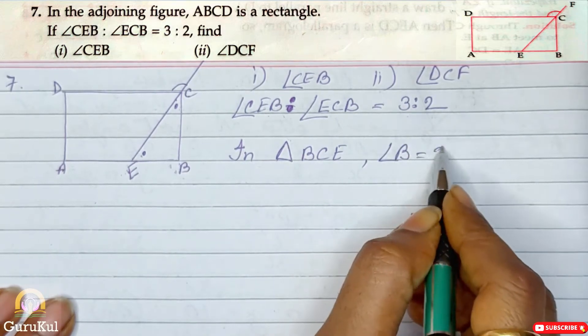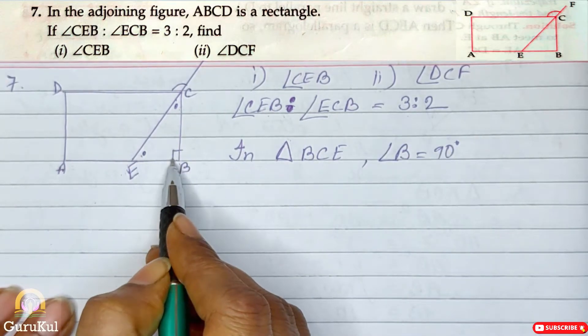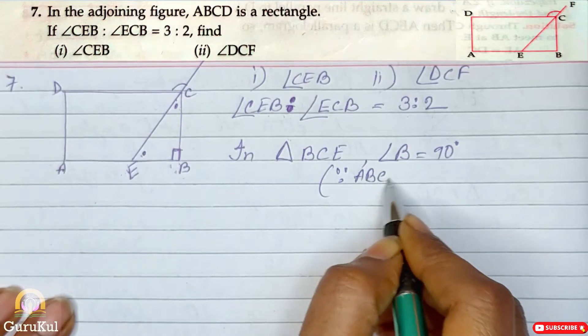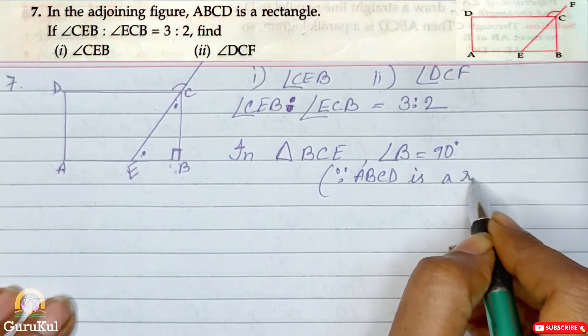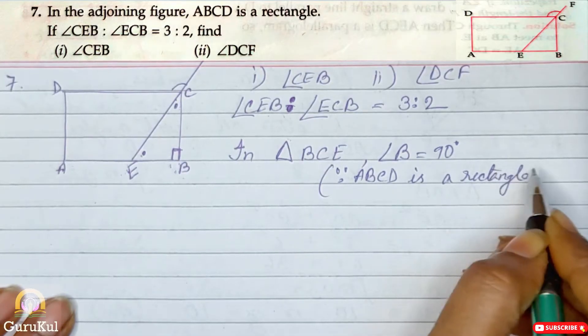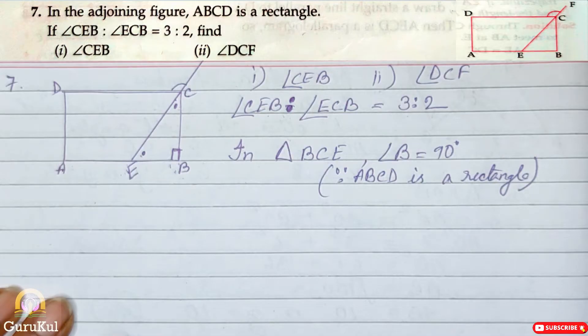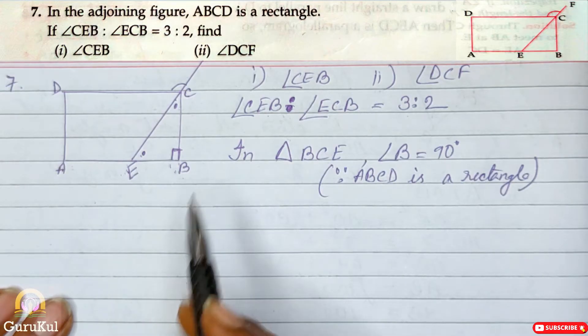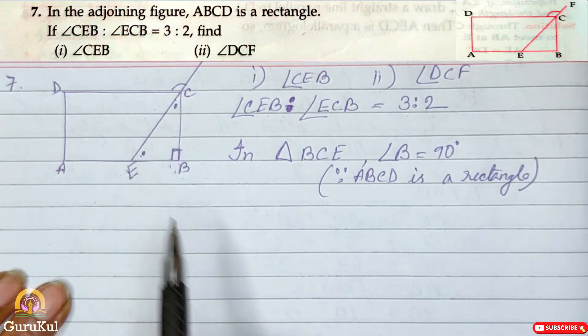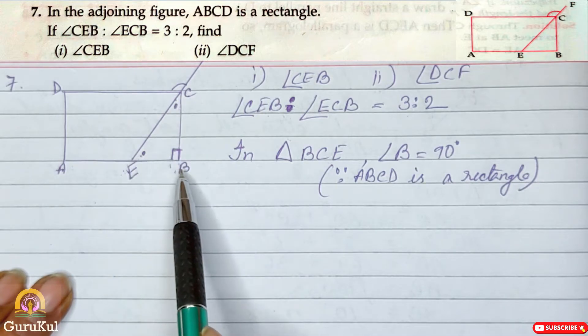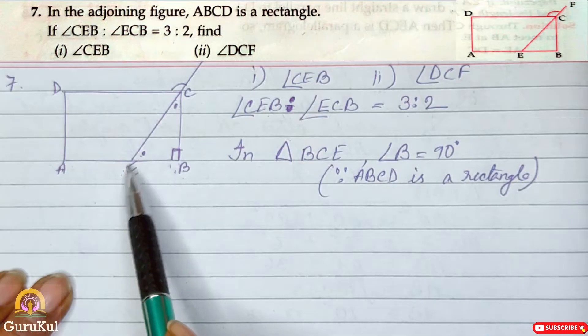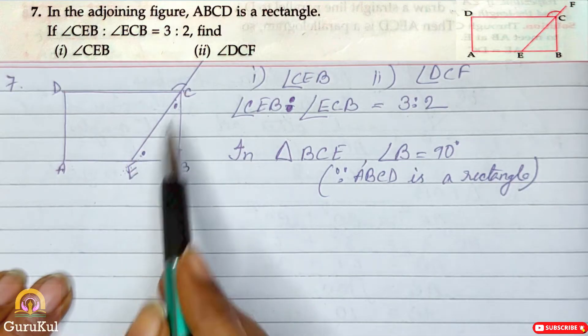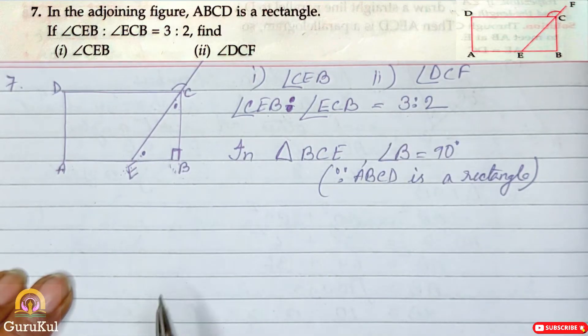In triangle BCE, angle B is equal to 90 degree. What is the reason? Since ABCD is a rectangle, and we know the properties of a rectangle, that all the 4 angles are right angle. So that's why this is 90 degree. That means, angle CEB plus angle ECB plus 90 degree should give us 180 degree. And the ratio of these two angles is given as 3 is to 2.